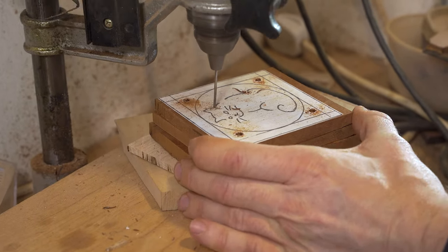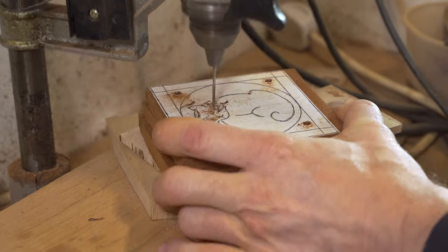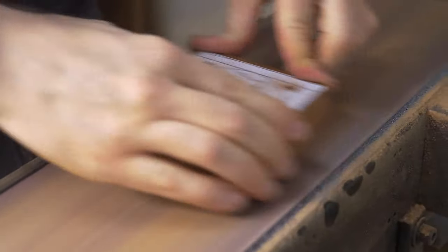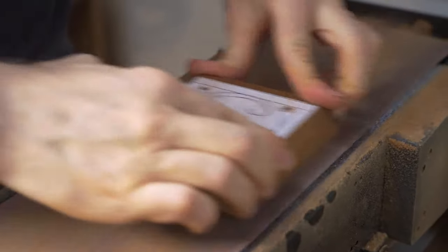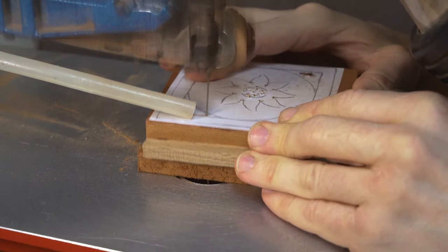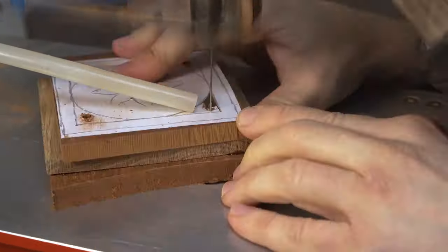Sand the back of the project nice and flat to allow it to sit on the bed of the scroll saw more evenly, making the process of cutting out easier. Now that our preparation is completed we can go across to the scroll saw and start cutting out the designs.